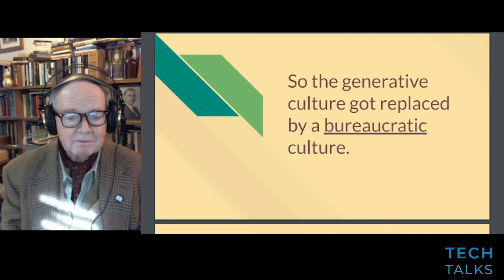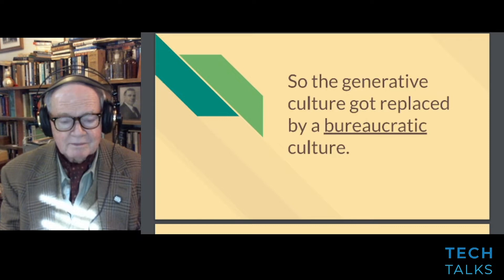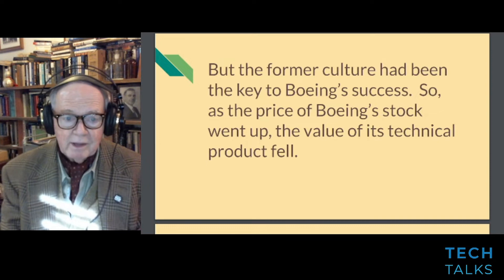Stonecipher was not happy with Boeing's culture for making planes. He wanted the culture focused on making money. So the generative culture got replaced by a bureaucratic culture. But the former culture had been the key to Boeing's success — so as the stock price went up, the value of its technical product fell.